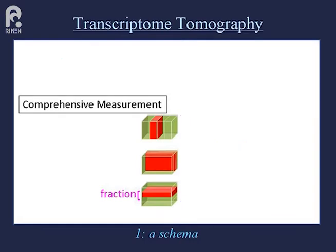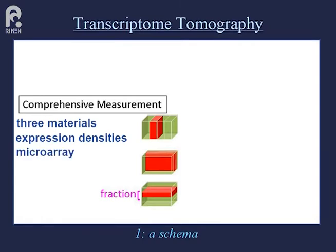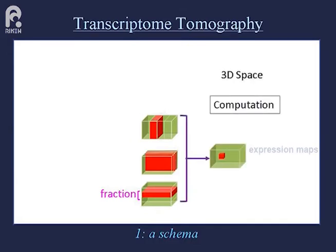In this technique, at least three materials are subjected to the biological experiment. Expression densities are measured using high-throughput methods such as microarray, and fractions of these materials are sectioned in each orthogonal plane. Expression maps are then reconstructed from the expression densities in the fractions.